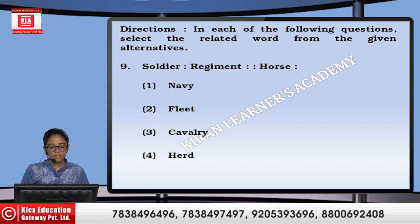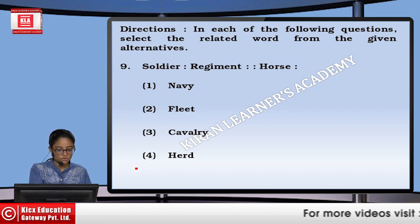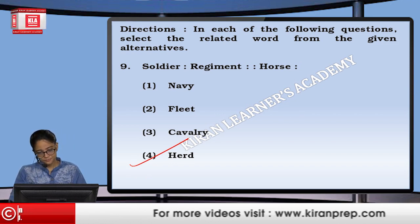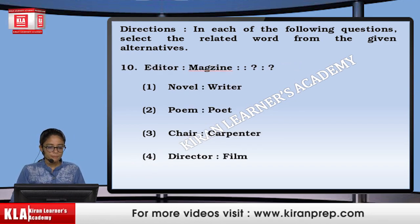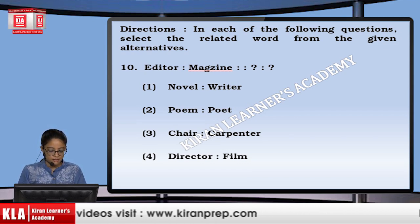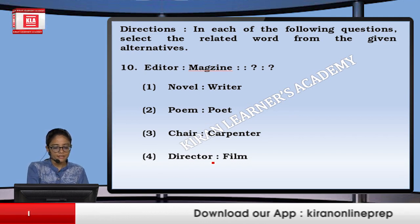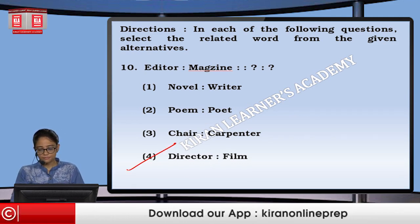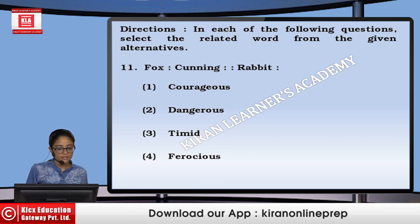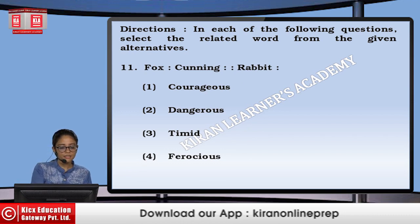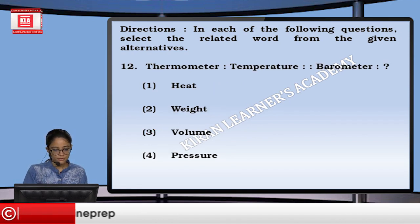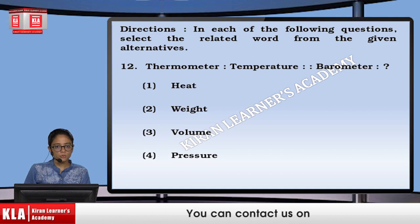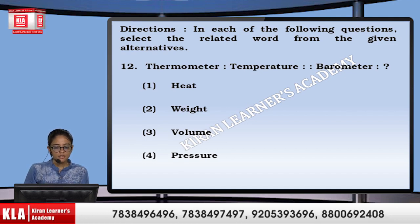Next, soldier belongs to regiment. Similarly, horse belongs to herd. Next, editor prepares the magazine — the editor basically edits and prepares the magazine for publication. Similarly, a film is made by the director. Next, fox is cunning — it is a characteristic. Similarly, a rabbit is timid. Next, we measure temperature with the help of a thermometer. Then, what is measured by a barometer is pressure.